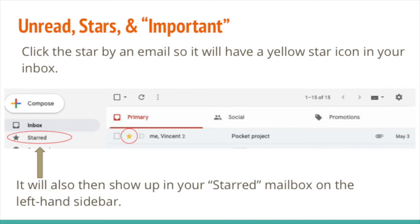You can also use stars to make emails visually stand out in your inbox. Just click on the little star by an email and that will fill in the icon as yellow. You can apply that however you want using whatever criteria makes sense to you — for example, all email from family. If you decide you want to un-star something, just click the star again and it will go back to being transparent. On the left-hand sidebar, there's a special mailbox for starred messages, so they'll also show up there.